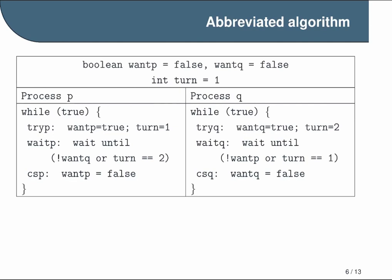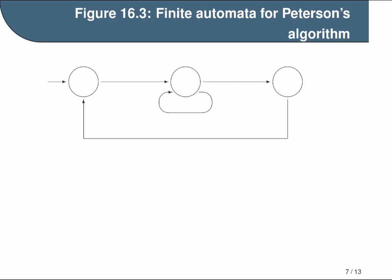So now that we have our states, we can create a state diagram. And this is what it will look like. Again, we'll start with process P, but process Q is very similar and its state diagram will be very similar. We have three nodes, one for each of our states. And in the first state, we begin with TRYP. We start with process P in this state. And when it is in this state, it sets the global variables WANTP to TRUE and TURN to one. And once it does that, it transitions out of the TRYP state into the WAITP state. And this state has two possible transitions.